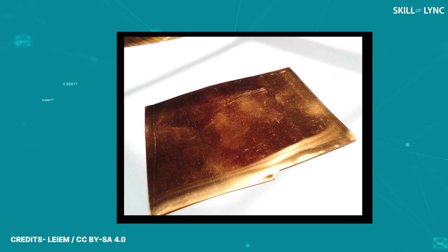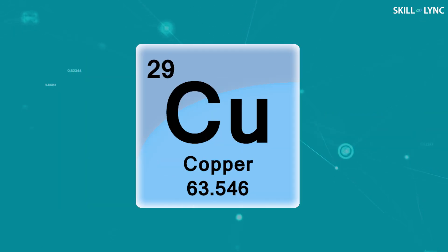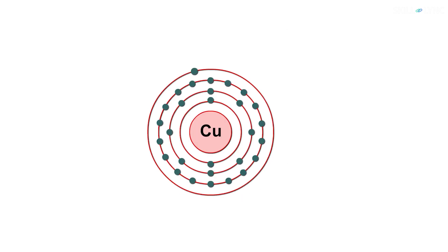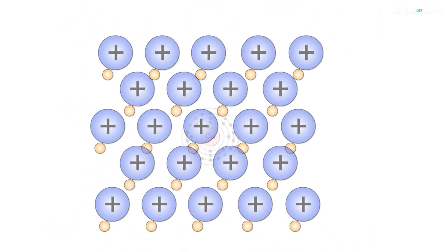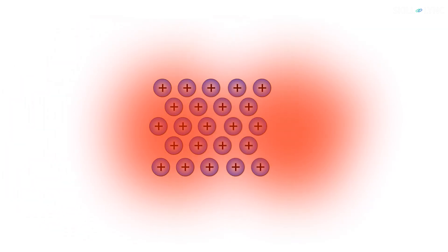A good example of a conductor is copper — it is an excellent conductor of both heat and electricity. This occurs because of the delocalized electrons the metal has. Copper has an atomic number of 29, meaning the atom has 29 protons and neutrons in its nucleus and 29 electrons revolving around it. Only one electron is present in its outermost shell, and this electron is very loosely bound to the nucleus. Because of this, the outermost electron of each atom overlaps with many other atoms, giving rise to a cohesive binding force that holds the metallic crystal together.